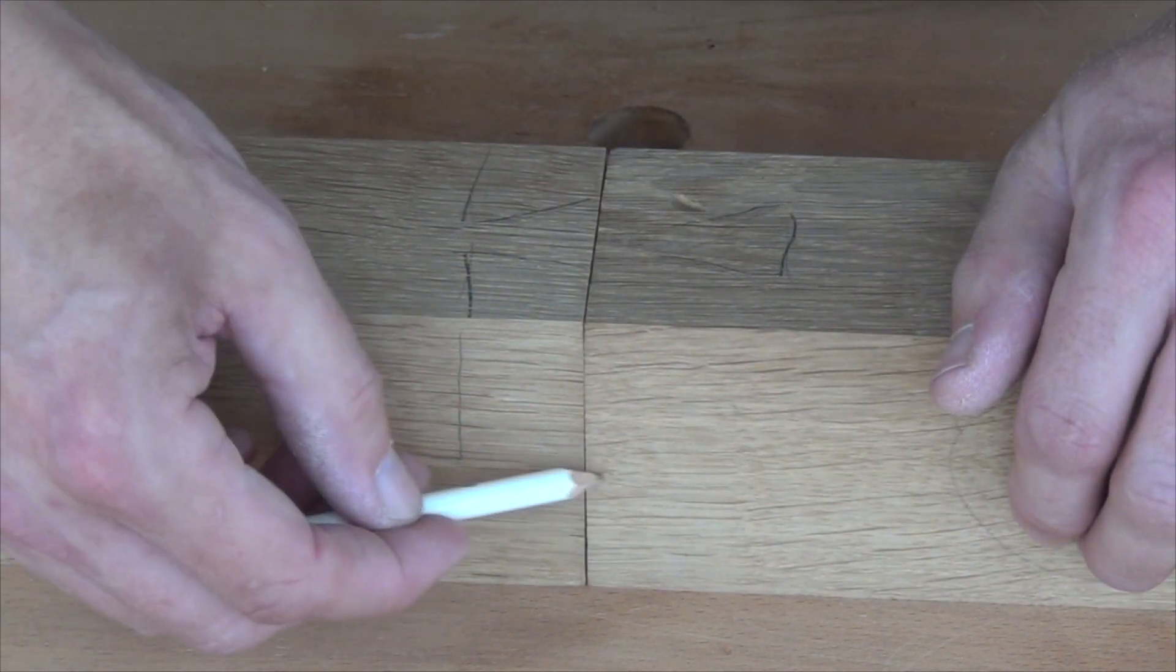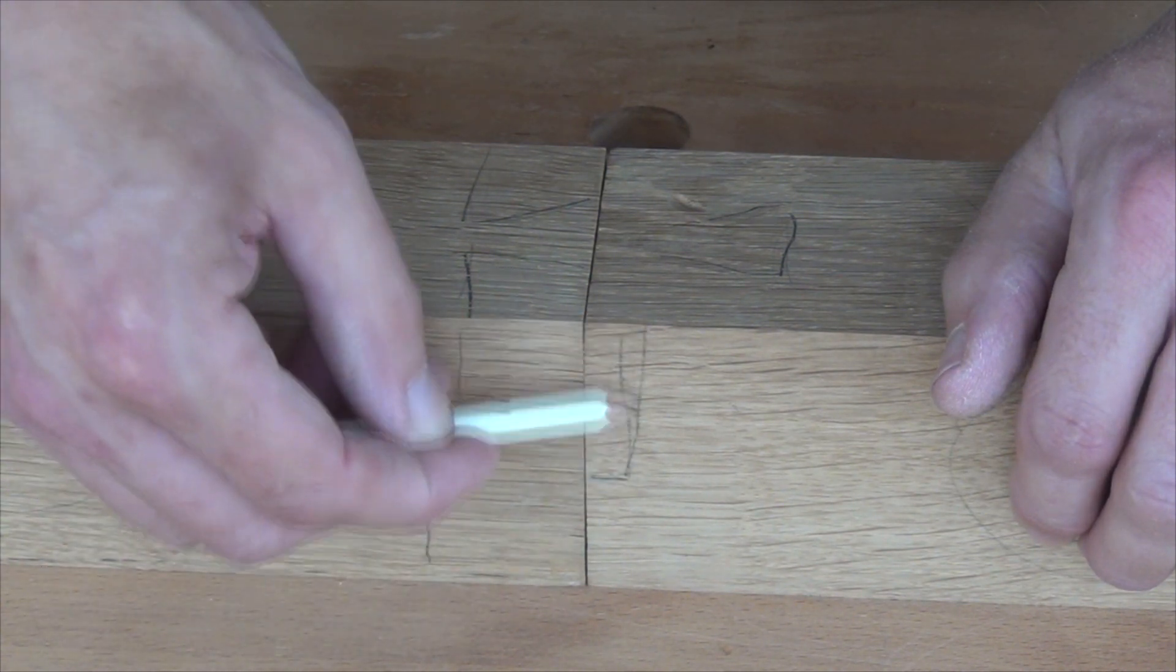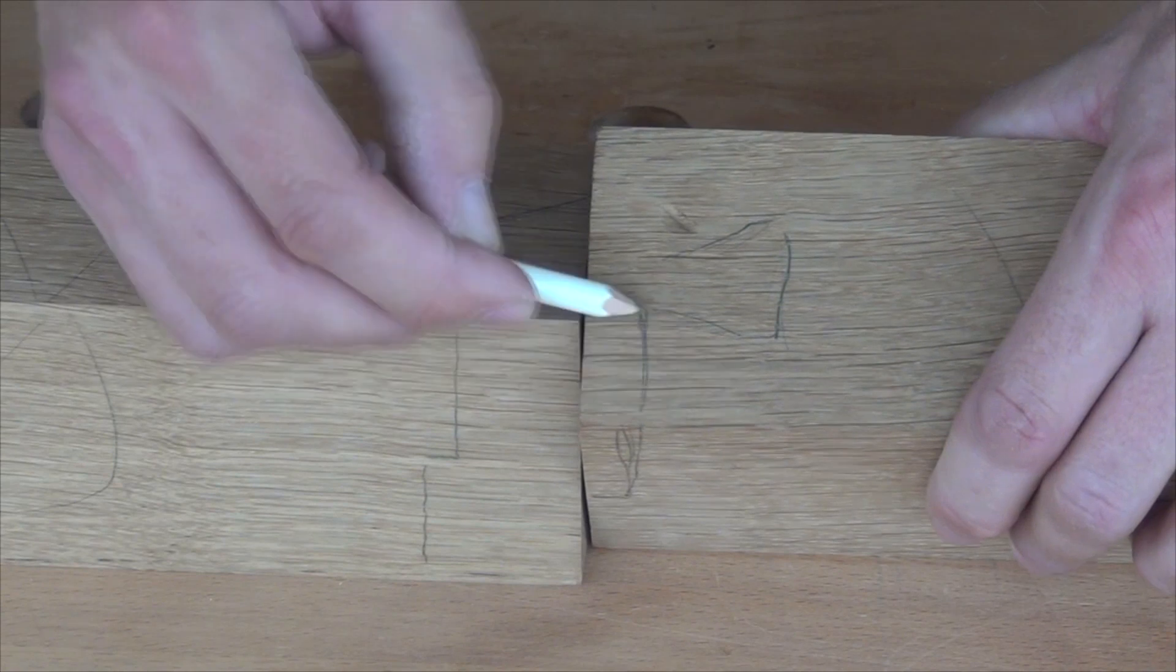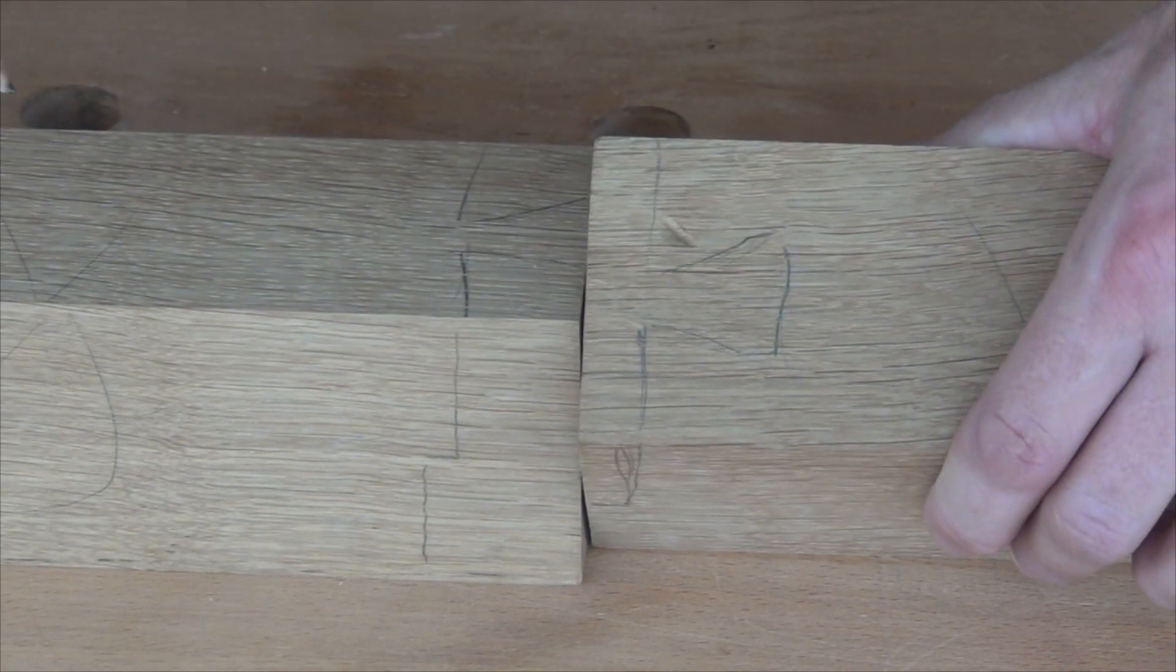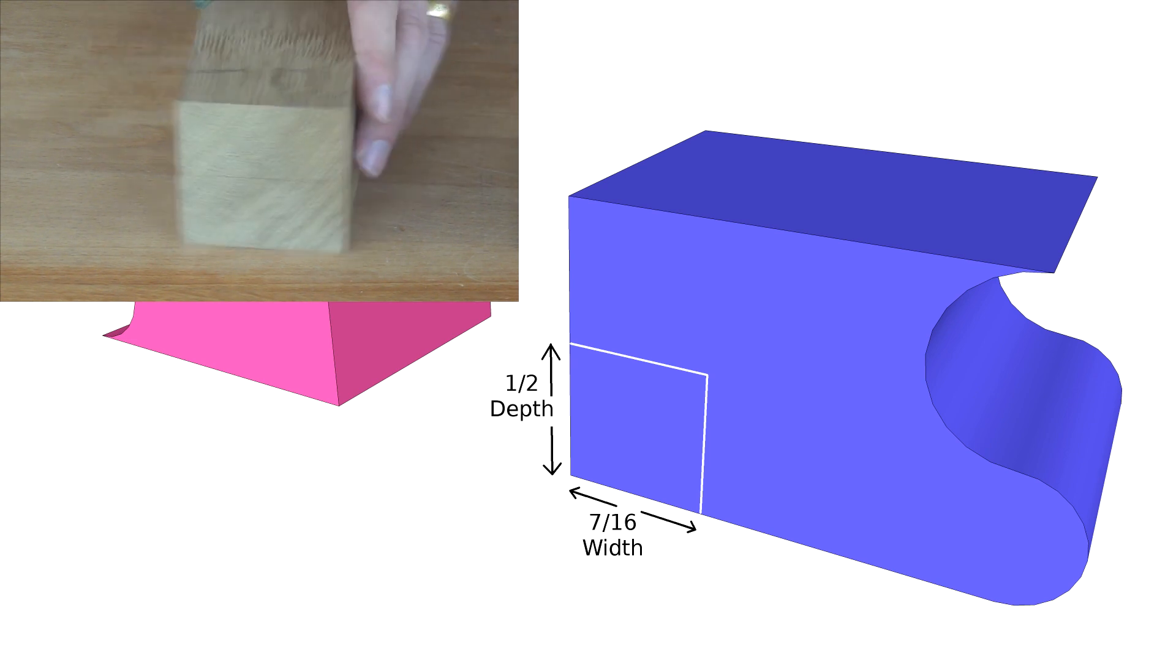And then obviously there'll need to be a step here, up there. That'll come across to where the socket is. Proportions aren't critical, but just use these as a guide.